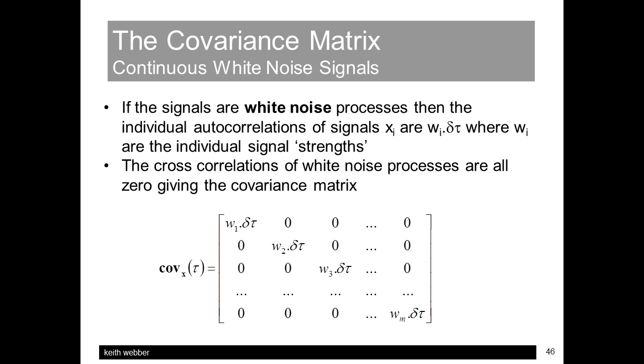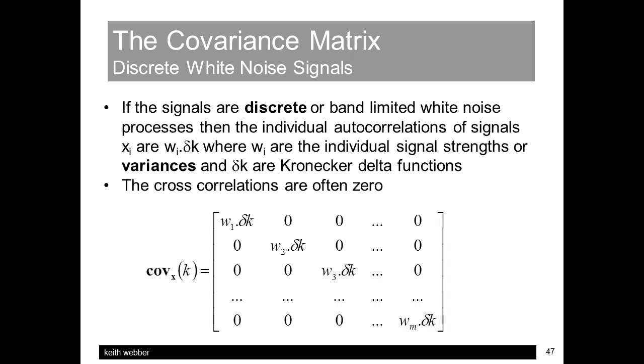Now, continuous infinite bandwidth white noise introduces some practical difficulties, but discrete band-limited white noise has finite rather than infinite power and signal variance. It may be possible for off-diagonal terms to be correlated for specific processes and sampling rates, but often they aren't. And the covariance matrix is now a function of the discrete time step K, and the diagonal terms are the individual signal weights, multiplied by the Kronecker delta function, the discrete version of Dirac. And the weights themselves are the signal variances.